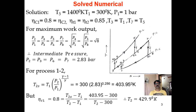This is the TS diagram for this gas turbine cycle. Point 1 is the entry to the compressor, so P1 is 1 bar and T1 is 300 Kelvin. Maximum temperature of the cycle is T5, that is 1400 Kelvin. Process 1 to 2S is isentropic compression; 1 to 2 is the actual compression. T1 equals T3 because of perfect intercooling.